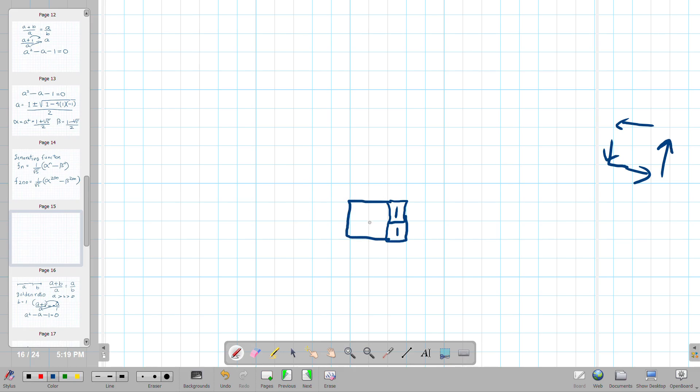So then the two term, right, so we're adding one and one, we get two, we'll be here. Then the three term is here. Then the five term is here. Then the eight term, it's an eight by eight square. I'm sorry, not a rectangle.